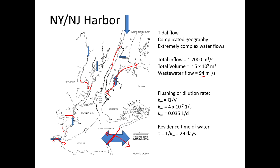Despite the complexity, we can calculate a rough flushing rate K_W = Q/V. It turns out to be 4 × 10⁻⁷ per second, or 0.035 per day. It's much easier to calculate tau = 1/K_W, which comes out to 29 days — about a month. So it takes about a month for water to flush out of this system.